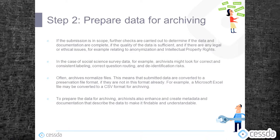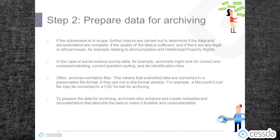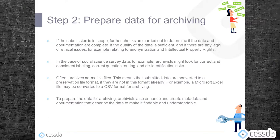Often archives normalize files. This means that submitted data are converted to a preservation file format if they are not in this format already. For example, a Microsoft Excel file might be converted to a CSV format for archiving. To prepare the data for archiving, archivists also enhance and create metadata and documentation that describe the data to make it findable and understandable.